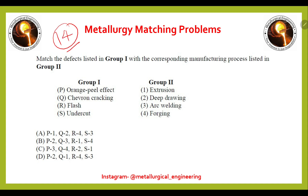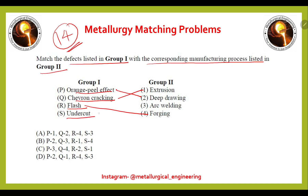This is the 14th matching problem — match defects in group one with corresponding manufacturing processes in group two. Orange peel effect matches P2, chevron cracking with extrusion (Q1), flash with forging (R4), and undercut mainly found in welding (S3). The right answer is option D: P2, Q1, R4, S3.